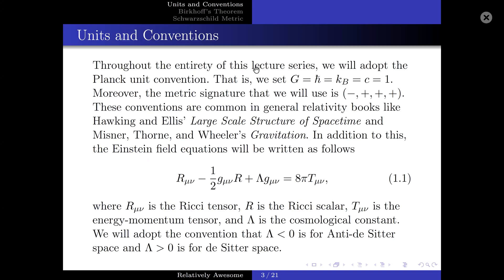Throughout the entirety of this lecture series, we will adopt the Planck unit convention. That is, we set Newton's constant, Planck's constant, Boltzmann's constant, and the speed of light to one. Moreover, the metric signature that we will use is the minus plus plus plus signature.